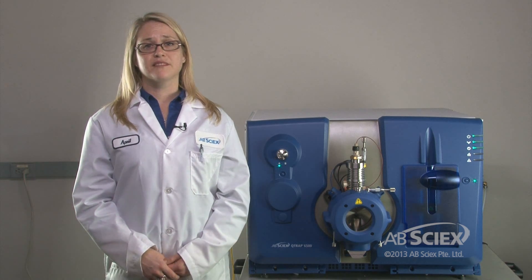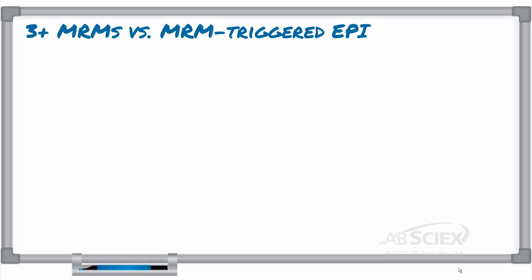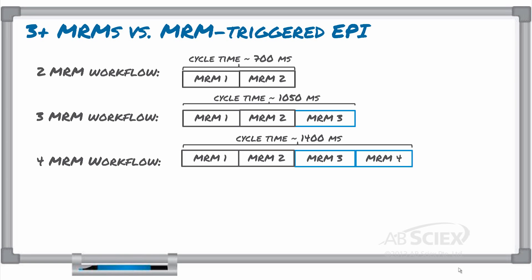You might be thinking now, I'll just add an extra MRM or two to my scheduled MRM method, and then I won't need to do the EPI. Well, it's all about cycle time. The more MRMs you add to your method, the longer the cycle time. This means you are reducing the number of data points you collect across your peak.